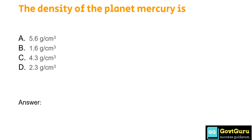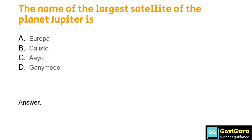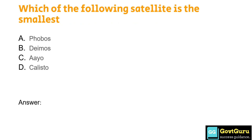The density of the planet Mercury is: Option A: 5.6 g/cm³, Option B: 1.6 g/cm³, Option C: 4.3 g/cm³, Option D: 2.3 g/cm³. The answer is Option A, 5.6 g/cm³. The name of the largest satellite of the planet Jupiter is: Option A: Europa, Option B: Callisto, Option C: Io, Option D: Ganymede. The answer is Option D, Ganymede.